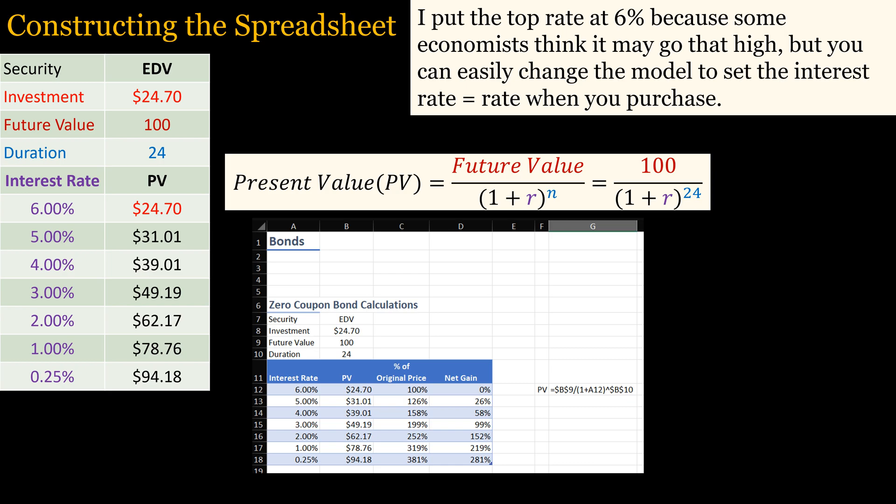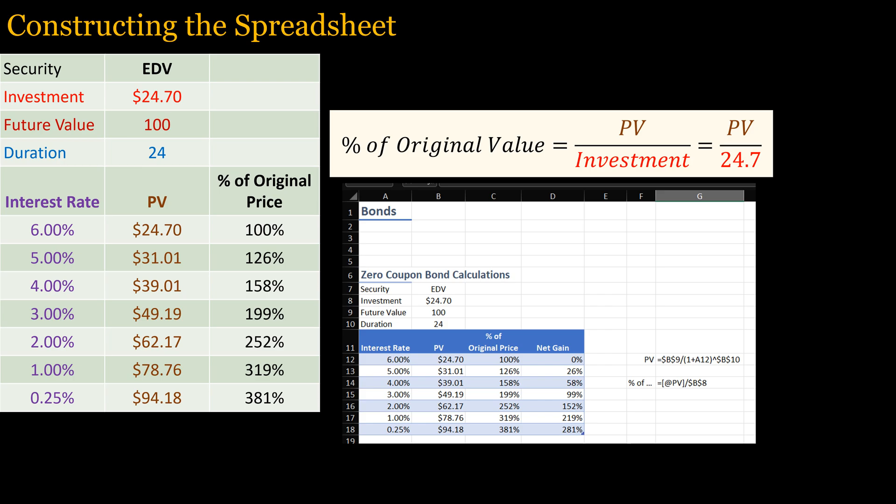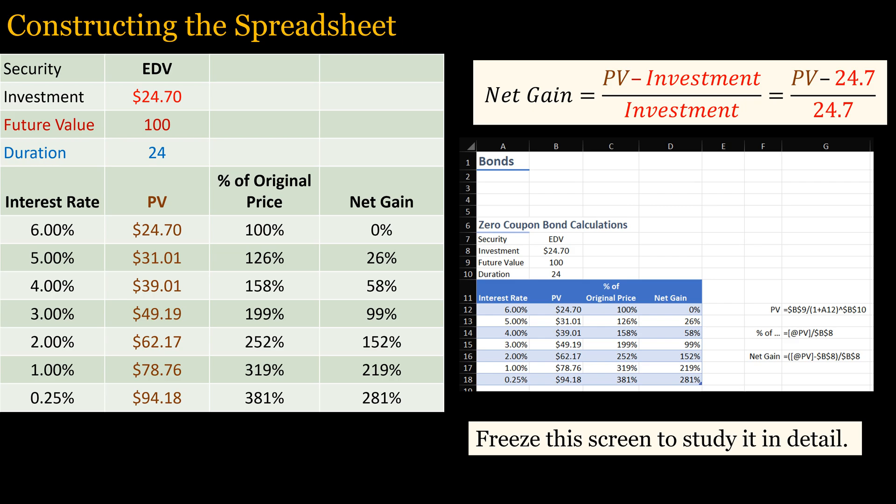We are not really interested in how much the amount is, only in how much it changes as interest rates change. You calculate the present value by using the formula on the screen. You put the formula in the first cell for the present value, making sure that the future value and the duration point to the same cells as you copy the formula downward. You can see on the screen how the formula is constructed in Microsoft Excel. Note the use of dollar signs to fix the reference to the future value and the duration. The last column shows the net gain. You can see the formula and the spreadsheet construction on the screen.